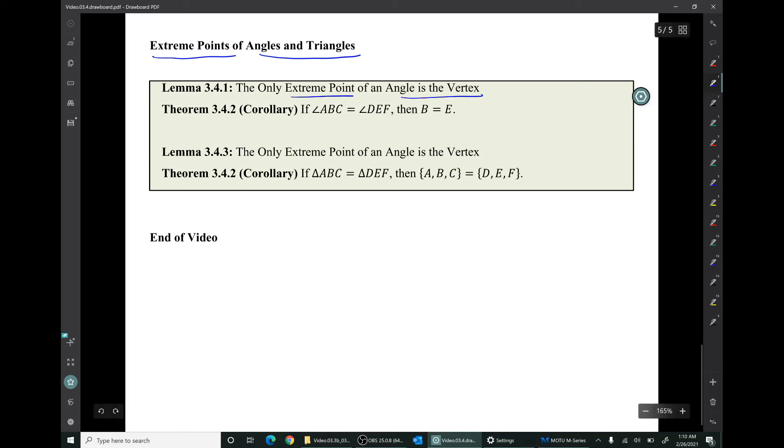So lemma 3.4.1 says the only extreme point of an angle is the vertex. And a quick corollary of that is that if two angles are equal, you can say that their vertices are the same point. You cannot say that the other points are the same point. You don't know if A is equal to D or not, or maybe equal to F or not. You can't say anything about the points that are not the vertex. But if two angles are equal, then you can say for sure that their vertices are the same point.